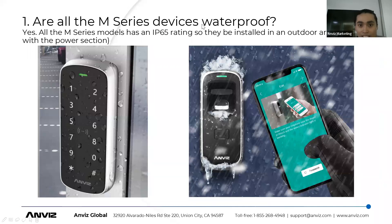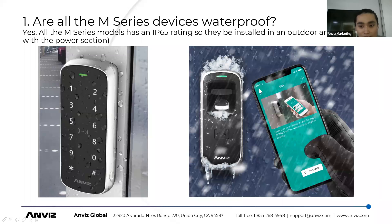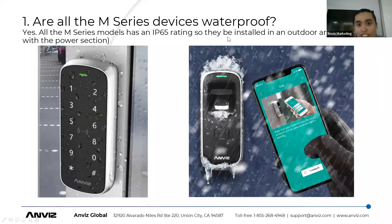The first frequently asked question is whether the M-Series devices are waterproof. As we can see here, these devices have metal cases designed for outdoor usage, so you can use them in rain or even in very cold environments and they will work without any problem. As shown in the second picture, you can also use the mobile application to access the M5 Plus via Bluetooth.